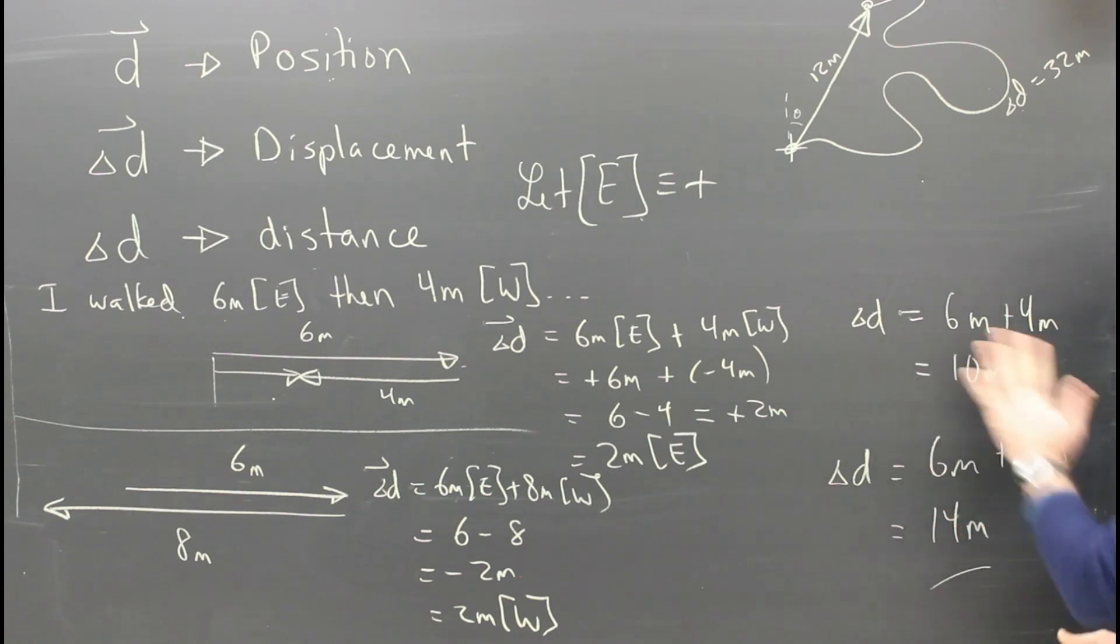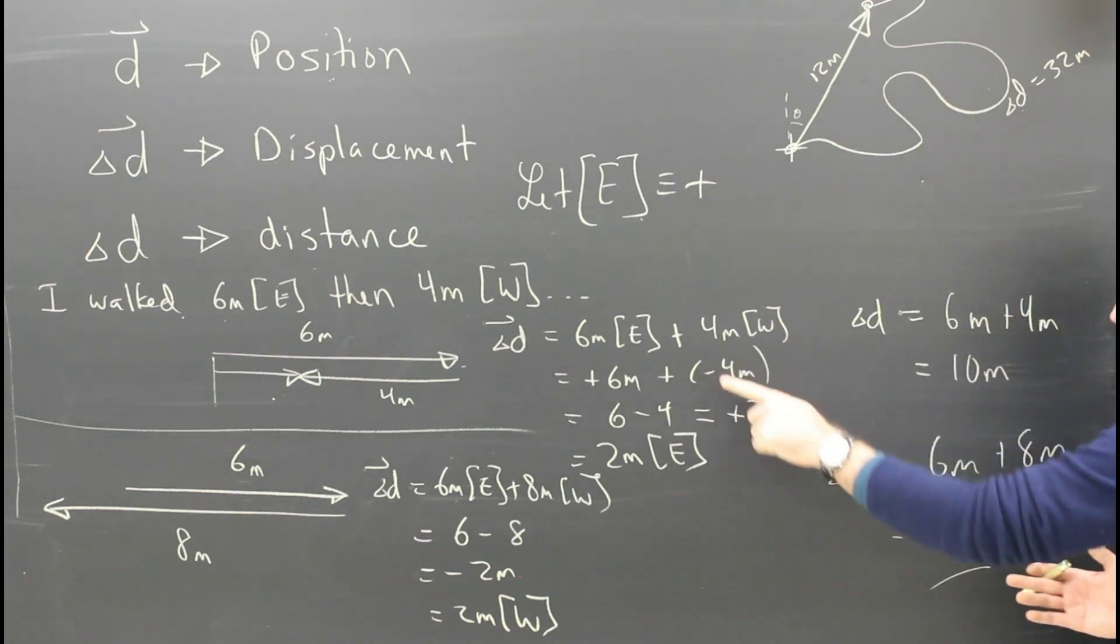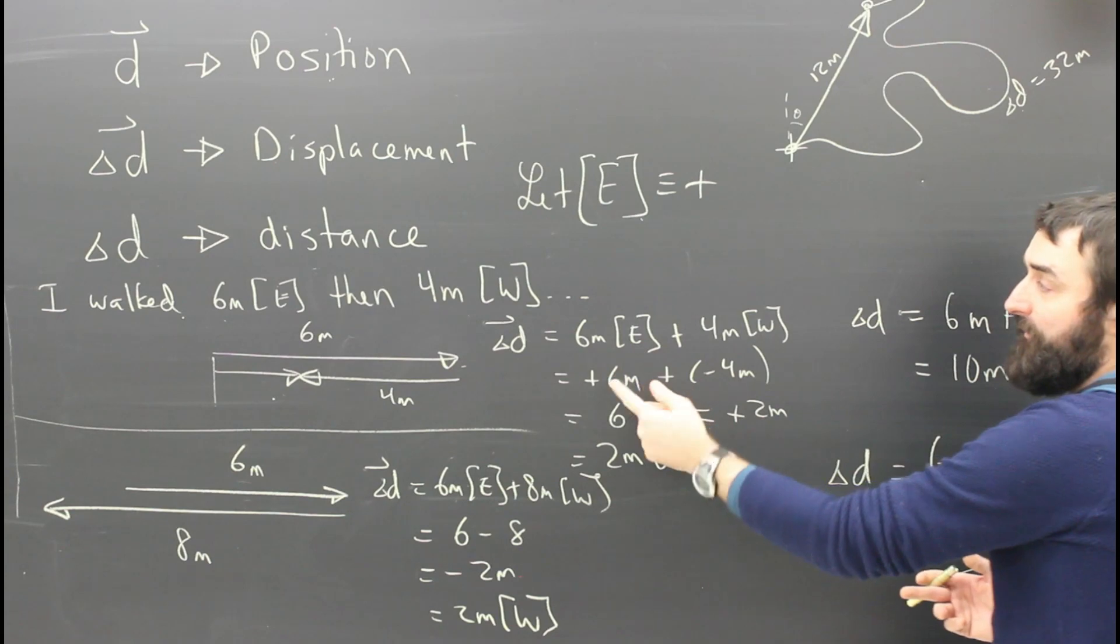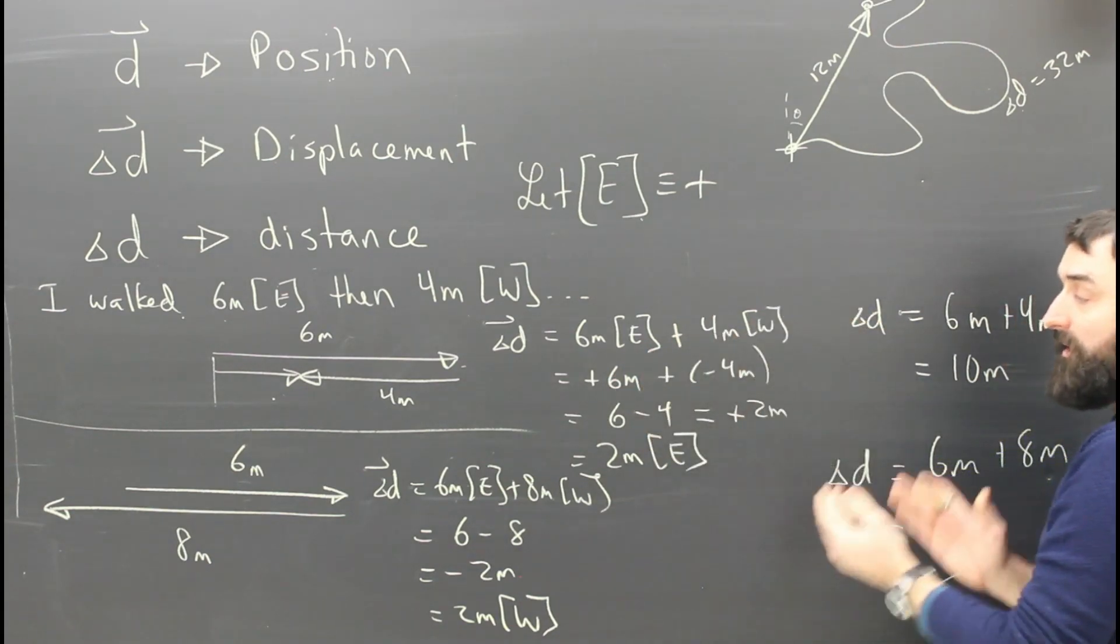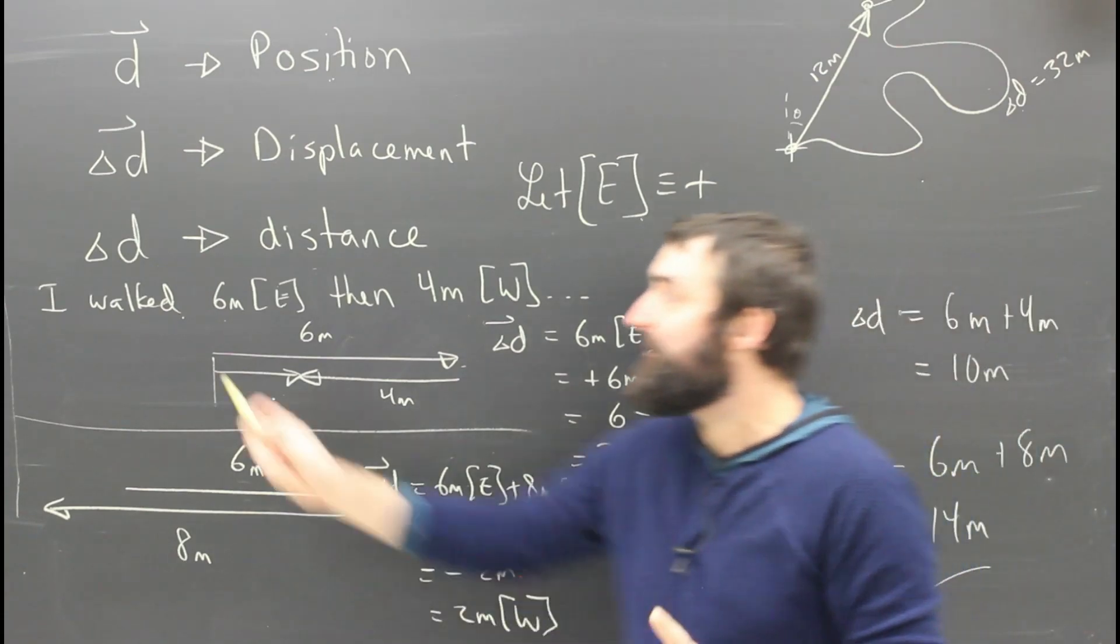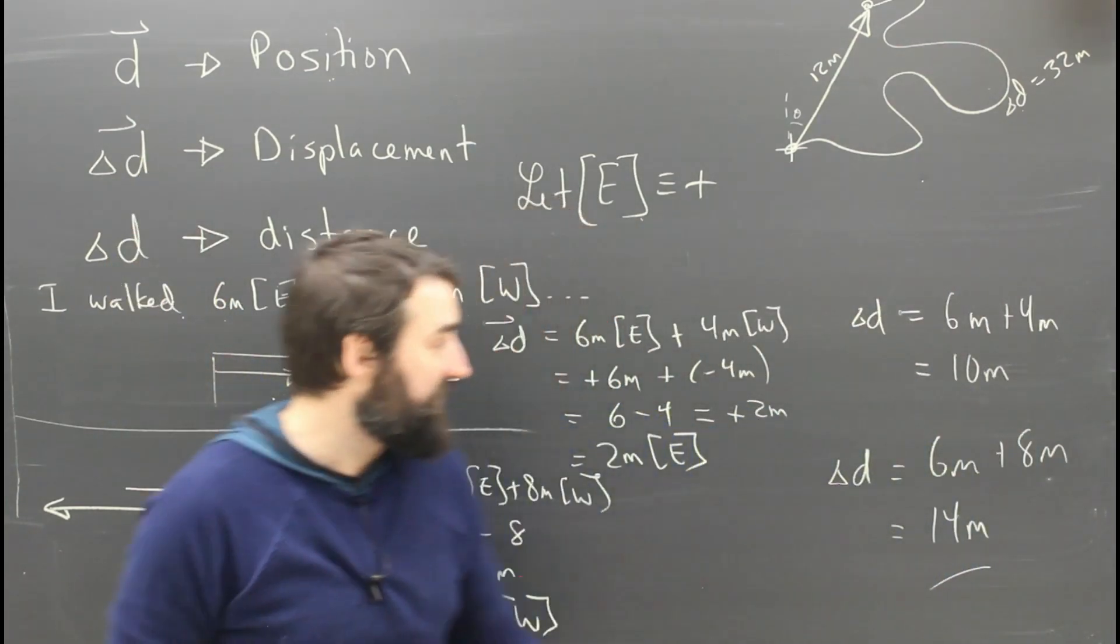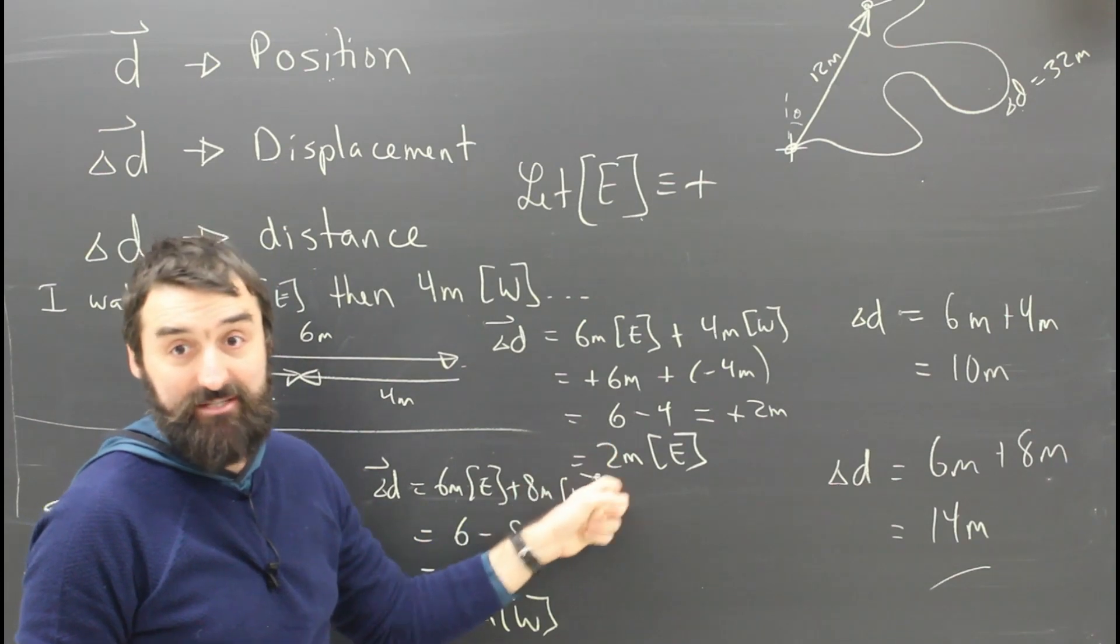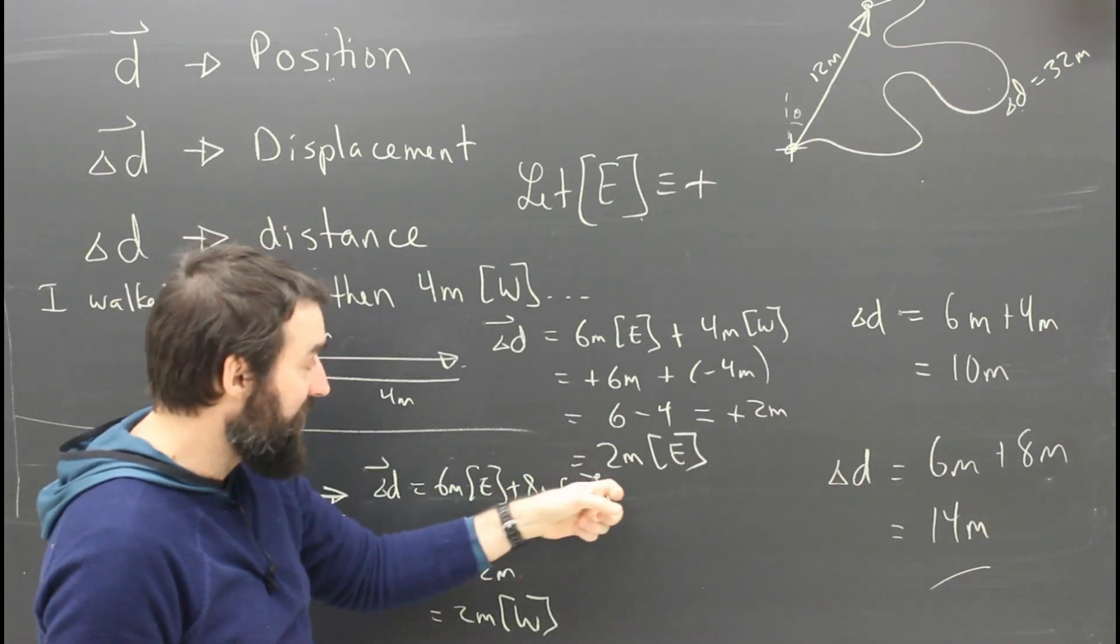So distance is how far you go. You don't pay any attention to the directions. Displacement is how far you end up from where you started with a direction. So don't think that even though the symbols are almost the same, distance is not just the same as displacement but with a direction.